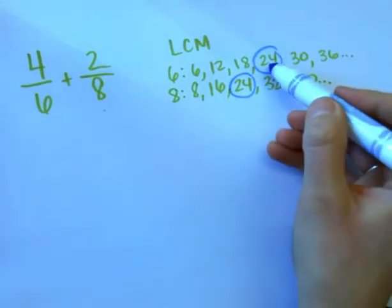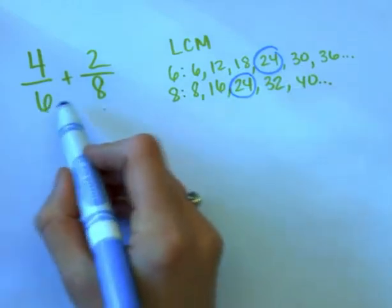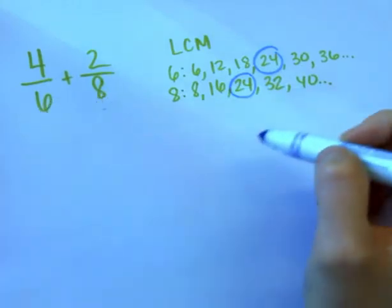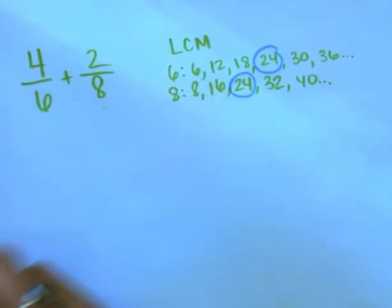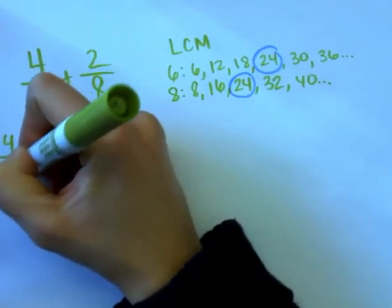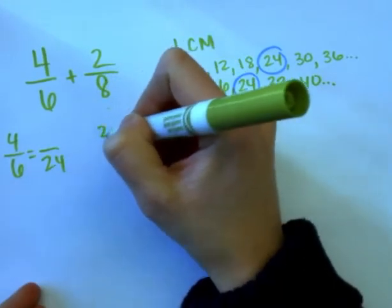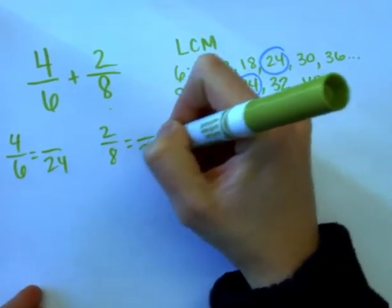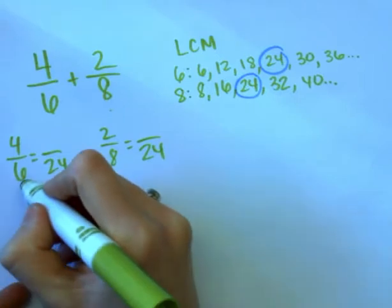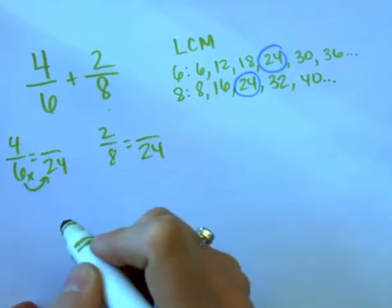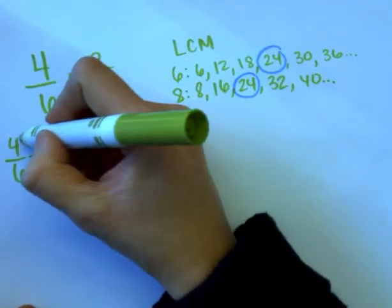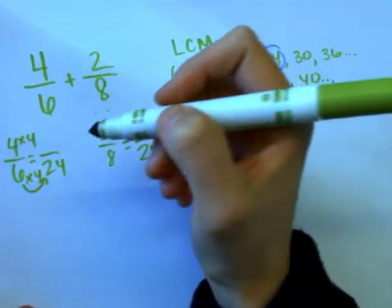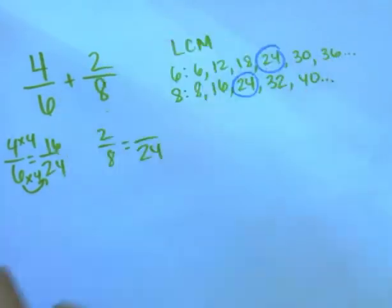I'm going to convert four-sixths and two-eighths to twenty-fourths. To take sixths into twenty-fourths, six times four is twenty-four, so I multiply the top by four as well: four times four is 16. Four-sixths converted to sixteen twenty-fourths.